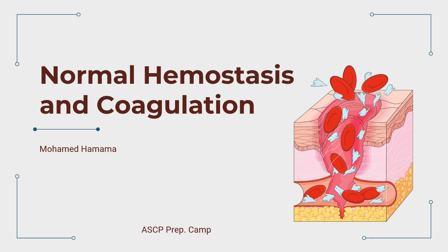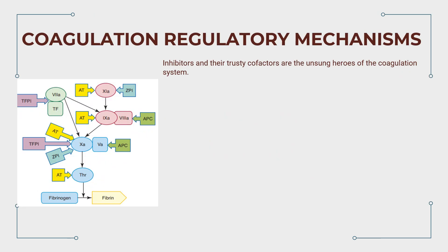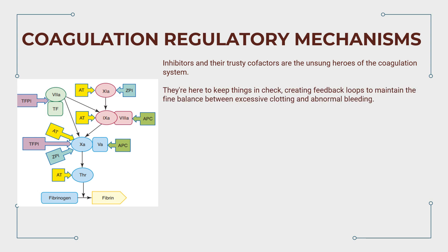In this part of normal hemostasis and coagulation, we delve into the world of coagulation regulatory mechanisms, where a delicate balance between clotting and bleeding is maintained by some incredible natural anticoagulants and their cofactors. Inhibitors and their cofactors are the unsung heroes of the coagulation system, creating feedback loops to maintain the fine balance between excessive clotting and abnormal bleeding.